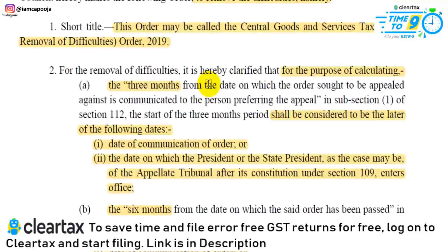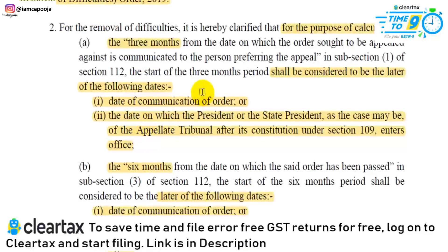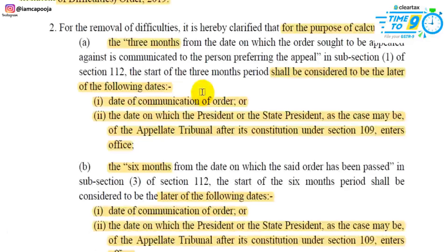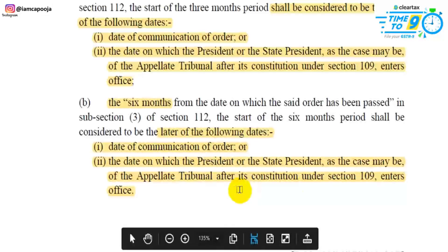For the removal of difficulties, it is hereby clarified that for the purpose of calculating the three-month period in the person's case — when someone wants to file an appeal — the three months shall be counted from the later of the following dates: either the date of communication of the order, or the date on which the President or State President, as the case may be, of the appellate tribunal, after its constitution under Section 109, enters office.